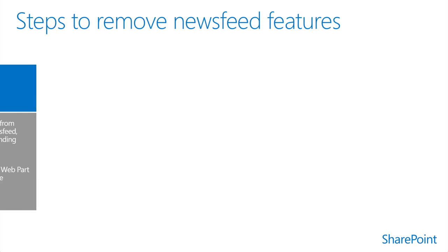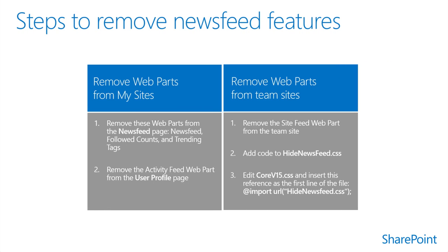The Yammer app for SharePoint allows you to embed Yammer feeds into an on-premises SharePoint 2013 site to make them more social and engaging. Before you do that, you must remove the news feed web parts from My Sites and Team Sites, hide the user interface controls that provide social features, then install the Yammer app for SharePoint and add the Yammer feeds to your sites. An administrator makes changes to cascading style sheets to hide the user interface controls, and equivalent Yammer features will replace the removed SharePoint 2013 social features.